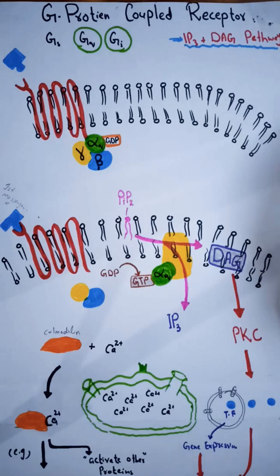The response and signaling mechanism followed by the GS protein — such as the cyclic AMP dependent pathway — has been discussed in the previous video. In this video I will talk about the GQ protein and GI protein mediated response.